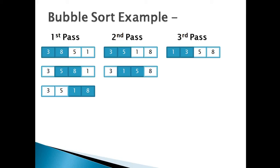In the second pass, as you compare and order pairs of elements sequentially, there is no need to consider the last pair because the last element in the array is already the largest. In the third pass, as you compare and order pairs of elements sequentially except the last two elements, because they are already in order. Hence, elements after the third pass get sorted as 1, 3, 5, 8.